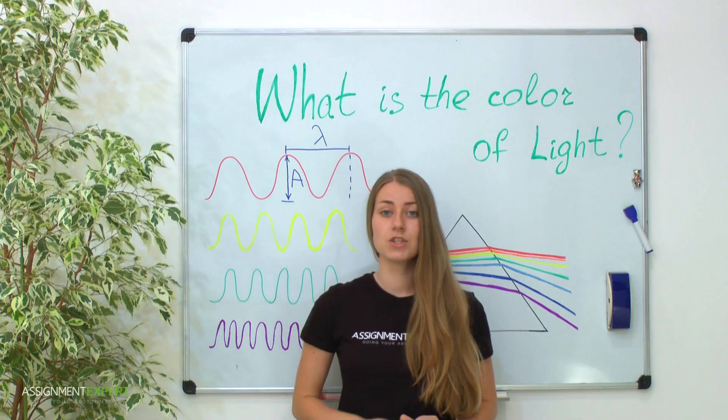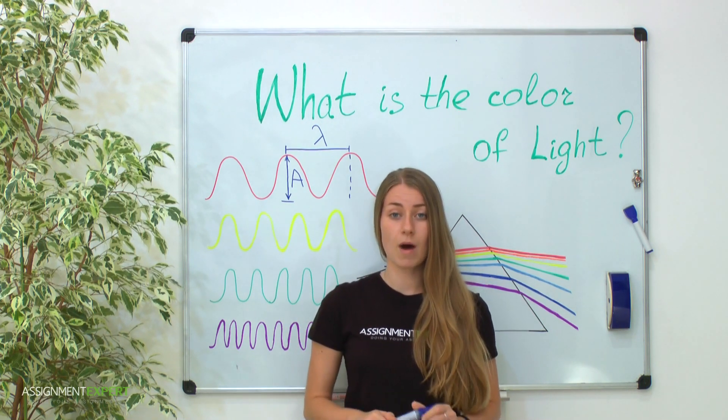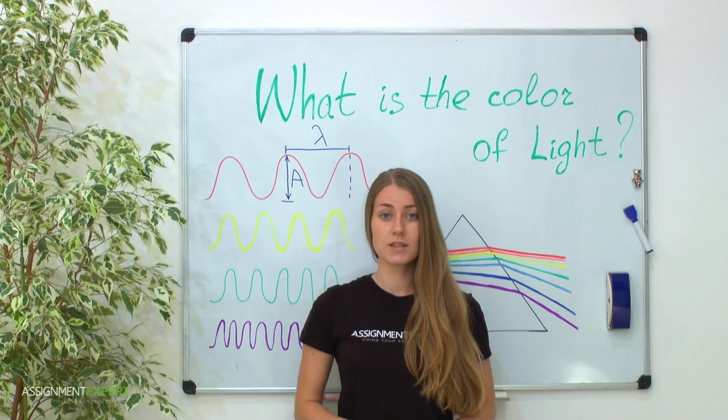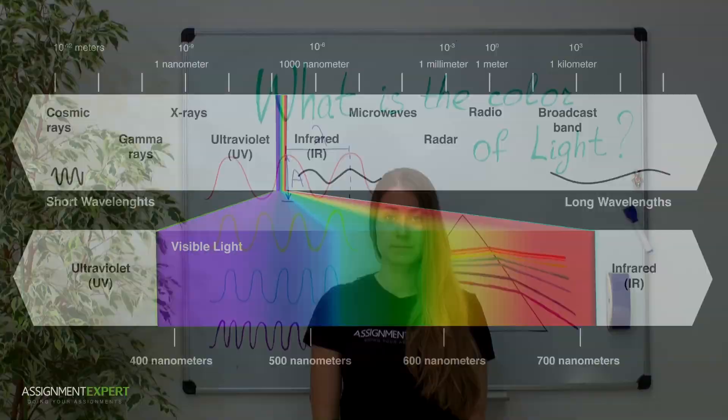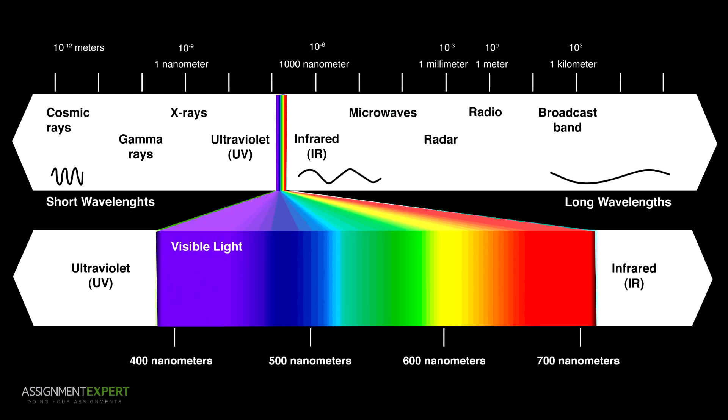And actually the main achievement of Newton is that he came up with idea how to separate and see all those constituents. Look, here is a picture of all constituents which is called a spectrum.